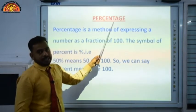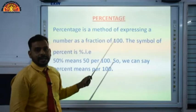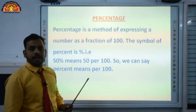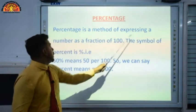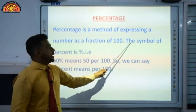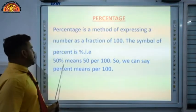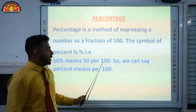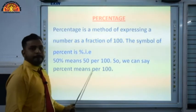What is percentage? The meaning of percentage is per cent. Per cent means per 100. Percentage is a method of expressing a number as a fraction of 100. The symbol of percentage is %. So 50% means 50 per 100. We can say percent means per 100.